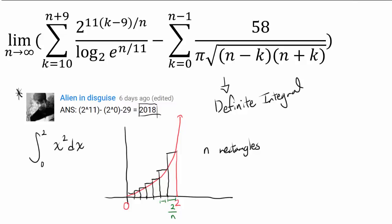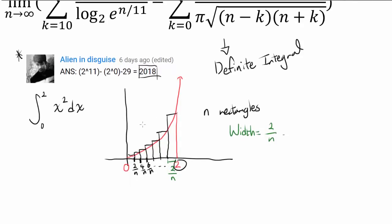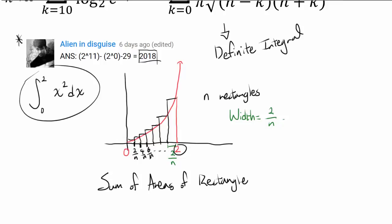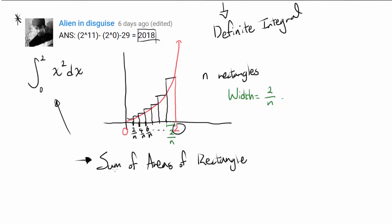Since you have n rectangles, their widths add up to 2 as they should. The heights change: the first value is 2 over n, then 4 over n, then 6 over n, and so on up to 2n over n, which is just 2. We plug these into our function x squared. This sum of rectangle areas is not equal to the integral — it's an approximation — and from it we take the limit to find the exact value.